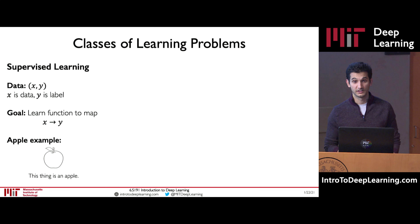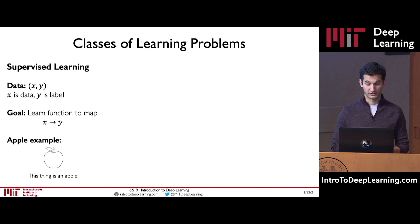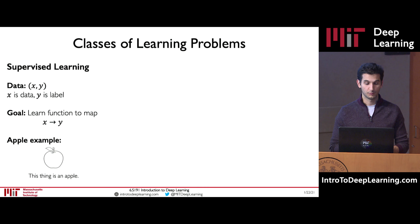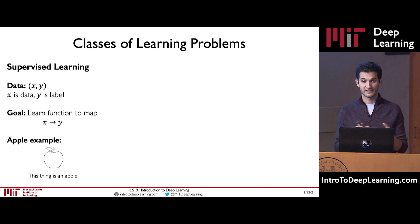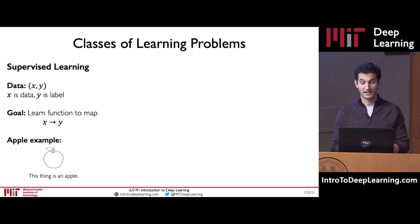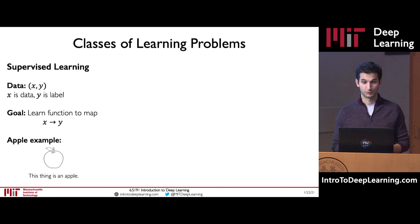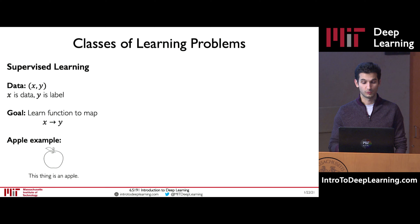At the beginning of this class we saw supervised learning, where we have a dataset of X as our input and Y as our output or label. Our goal is to learn a functional mapping from X to Y. For example, we could give a neural network an image of an apple, and the goal is to label the image and say 'this thing is an apple.' If we collect a bunch of images of apples, we can train that model in a supervised way.